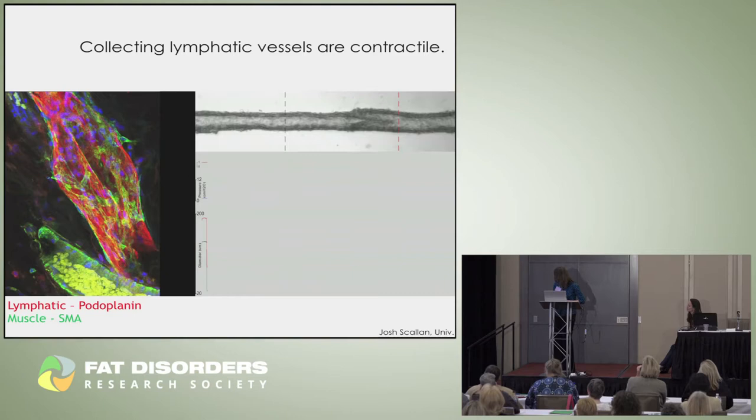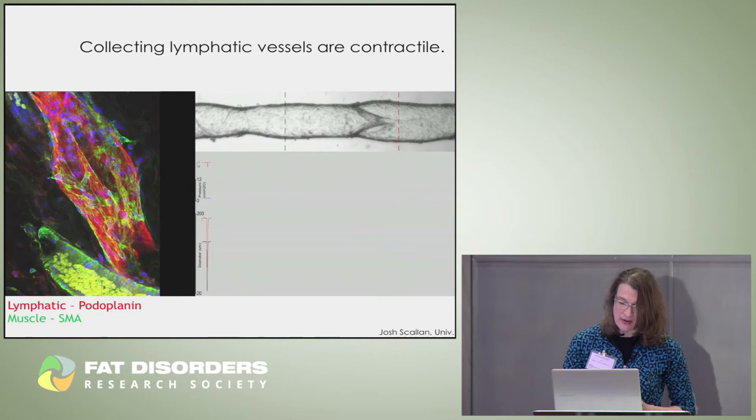The subcutaneous fat holds a different type of vessel in the lymphatic system — like the pump stations in a sewage system. What we've learned is that fat often co-localizes with these specialized transport vessels. Here is the lymph node, and inside the fat these vessels pump. A vessel isolated by my colleague Josh Scallon shows these vessels in fat actually contract, creating a suction force that allows flow to happen from the tissue.